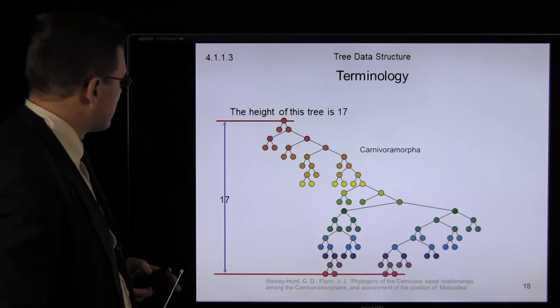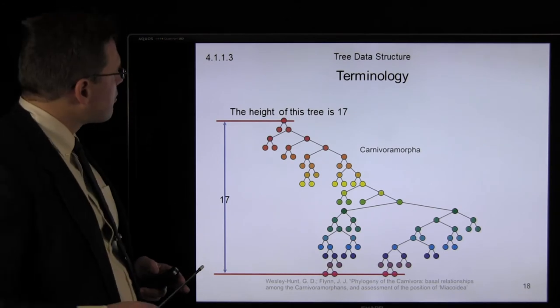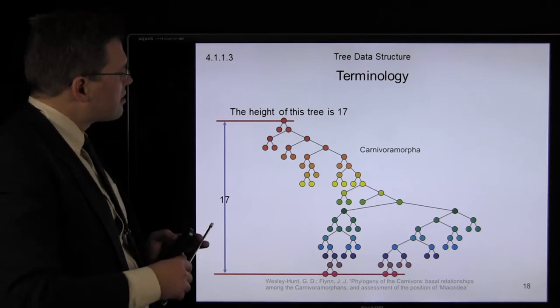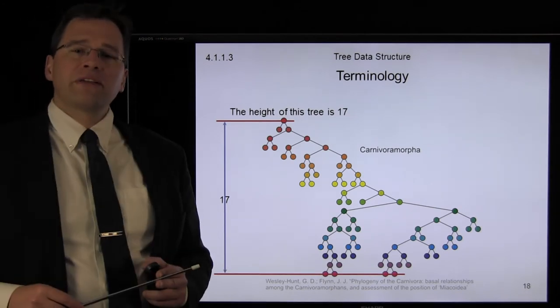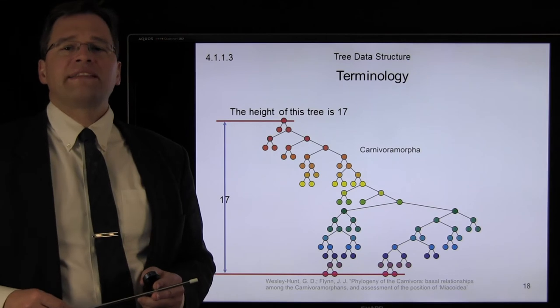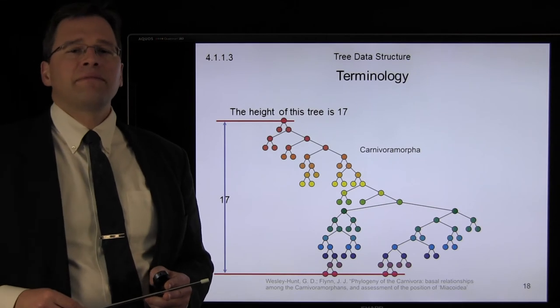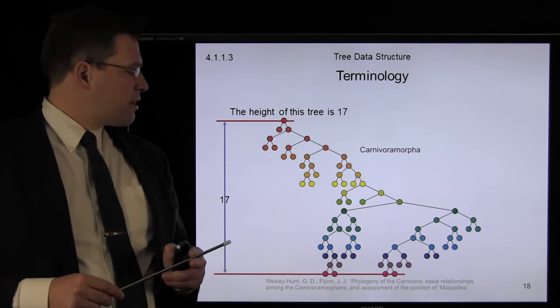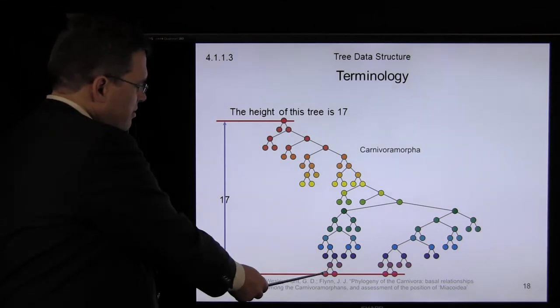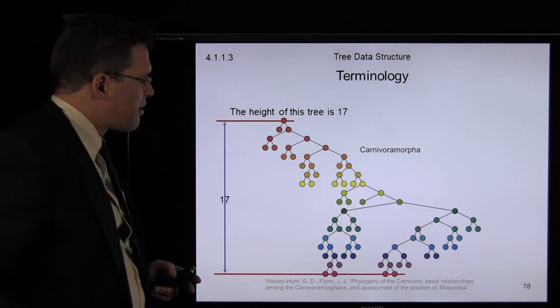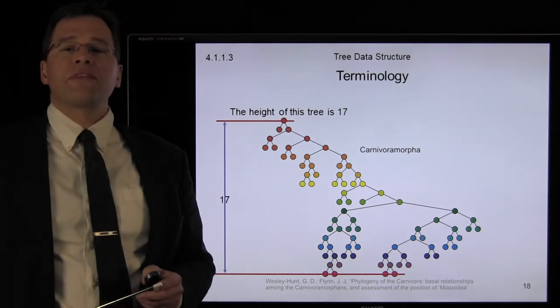In this example, the height of this phylogenetic tree is height seventeen — that is, the largest depth of any node within the tree.